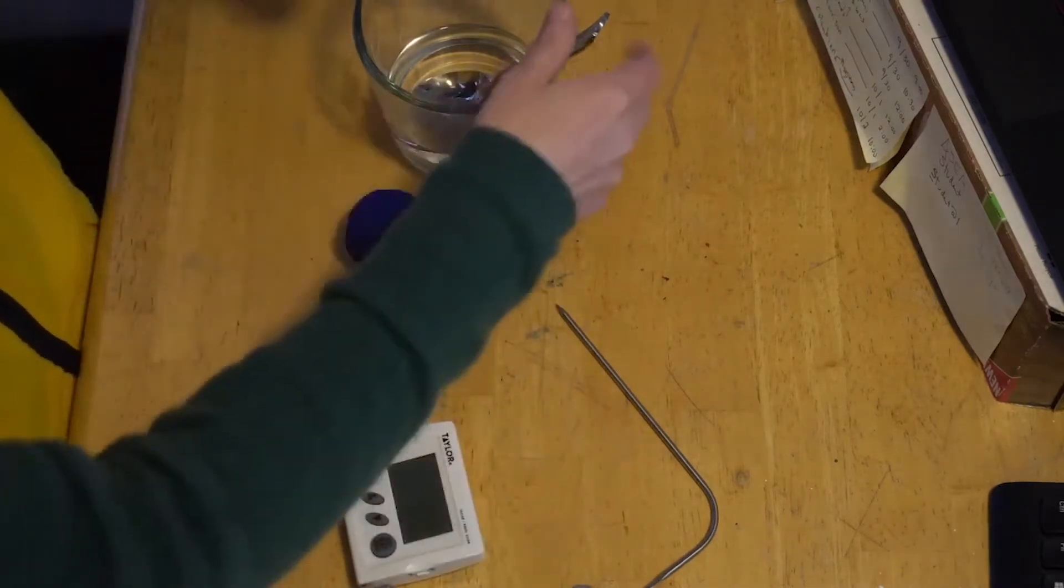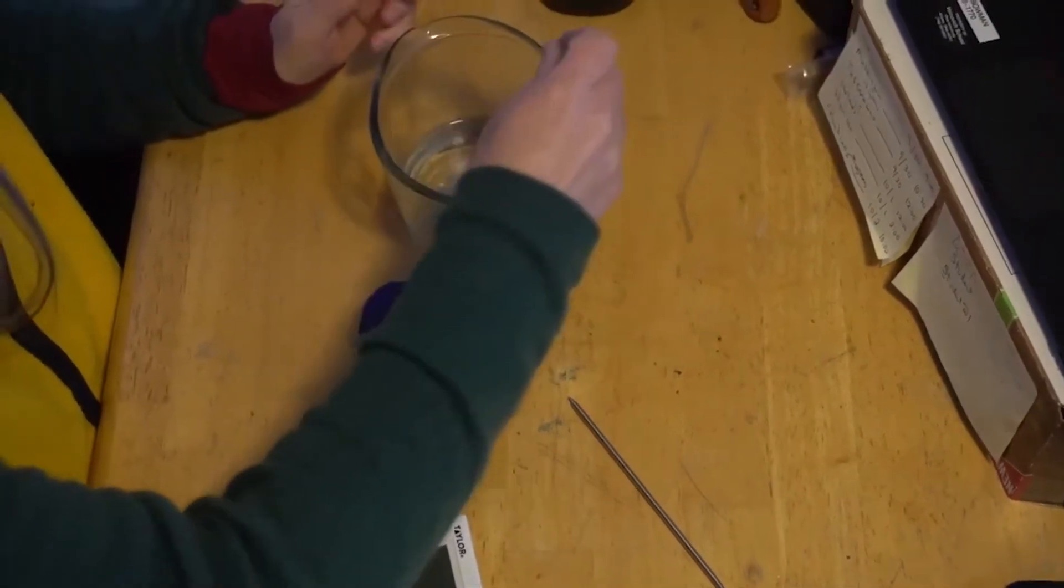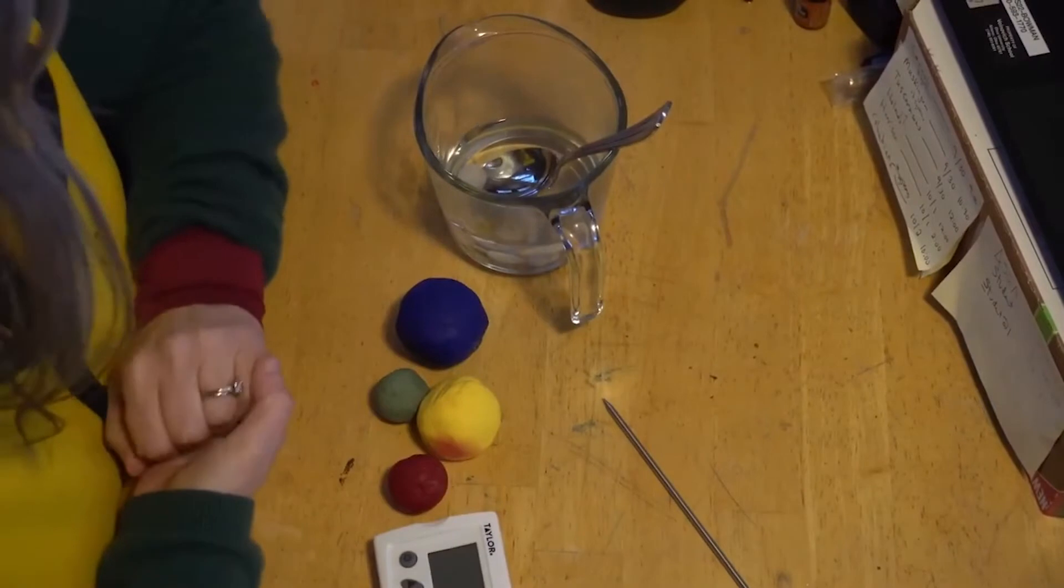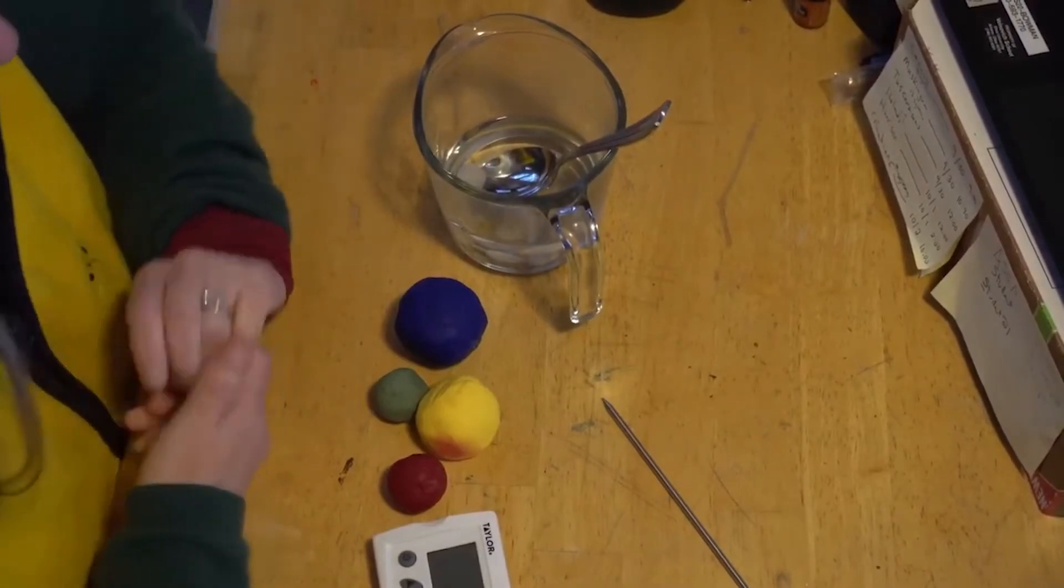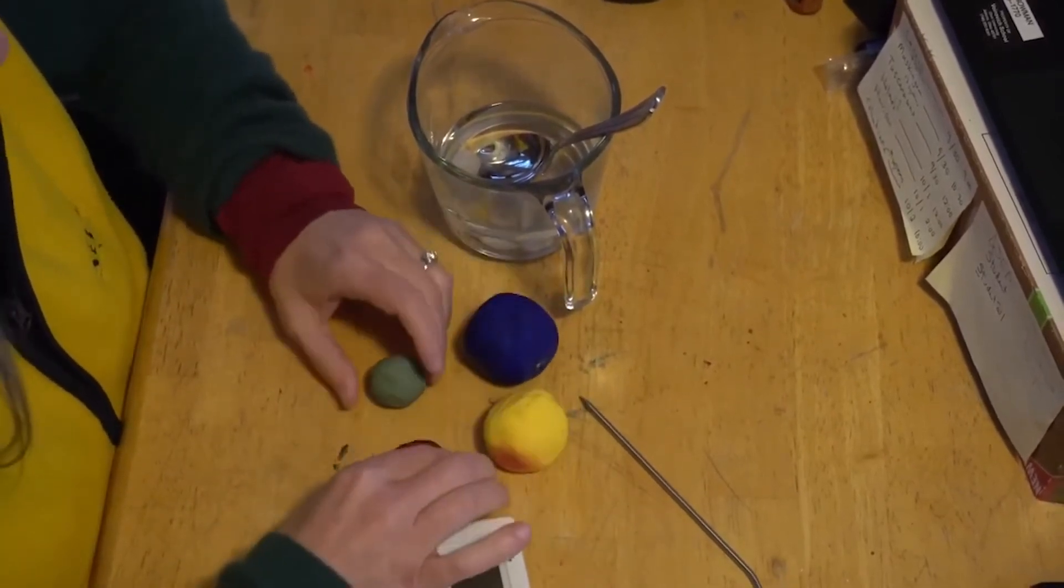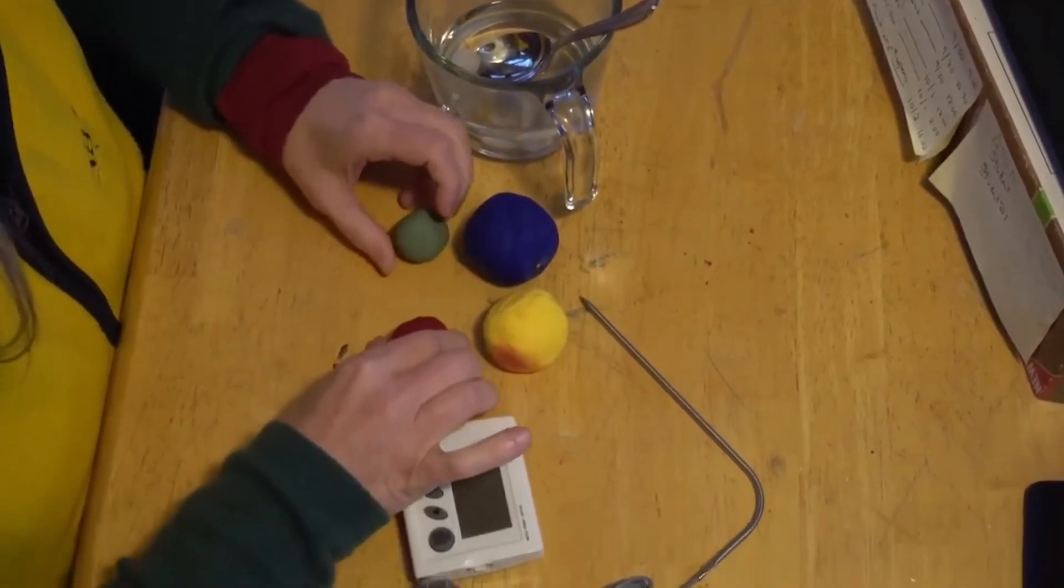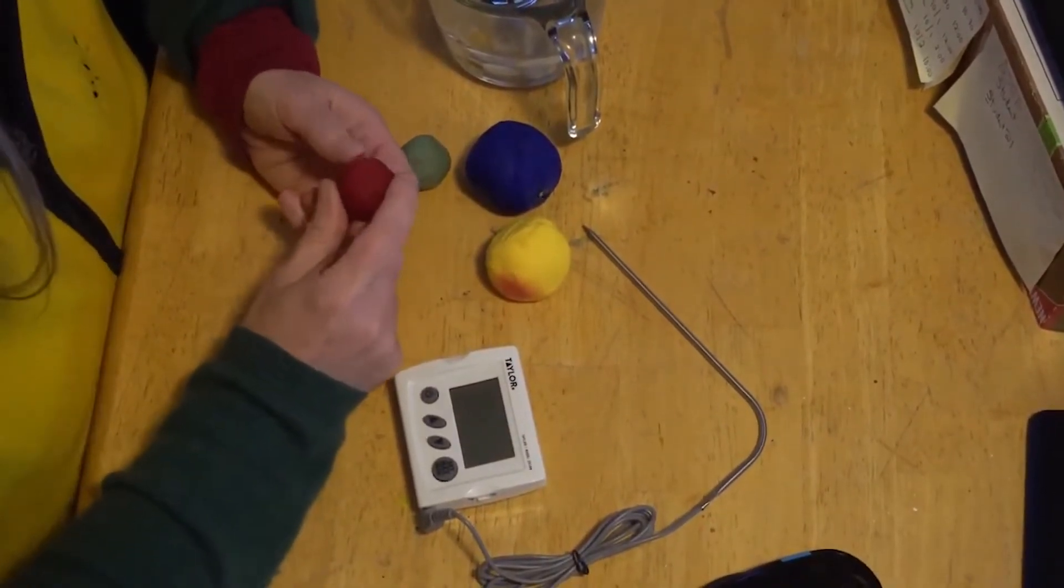To start with, we will take our rocks and put them into a hot cup of water and let the rocks absorb as much heat and energy from the hot water. While those are warming up, we are going to take our play-doh and these are representing the different layers of the Earth.